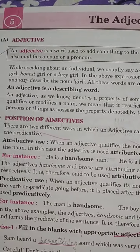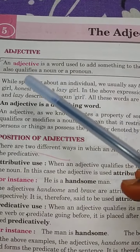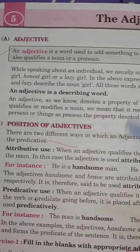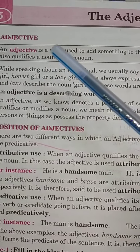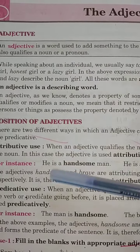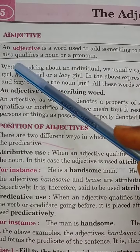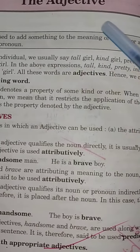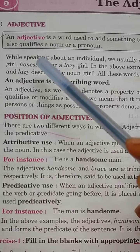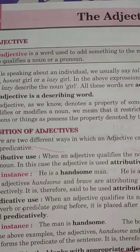Aaj hum adjective ke baare mein padhenge. So let's begin with Point A — Adjective. First of all, before starting the chapter, you have to know the definition. Adjective hota kya hai — jisko Hindi mein 'Visheshita' bhi bolte hain. The definition: an adjective is a word used to add something to the meaning of a noun or pronoun, and also qualifies a noun or pronoun.